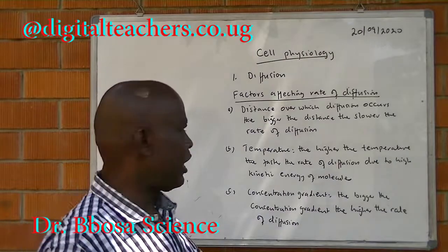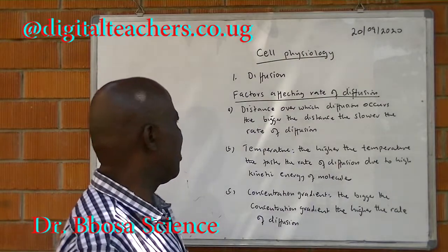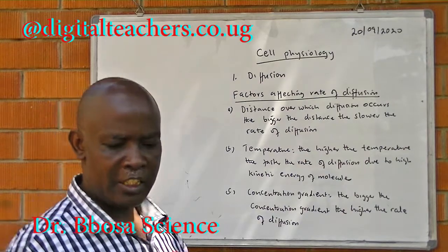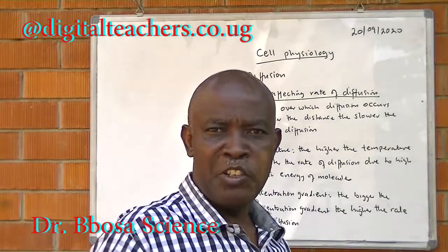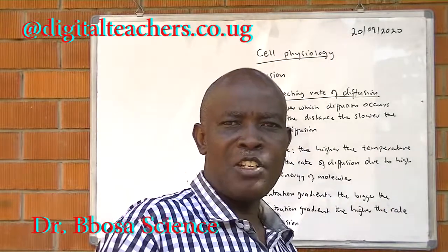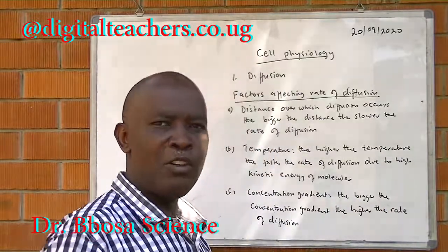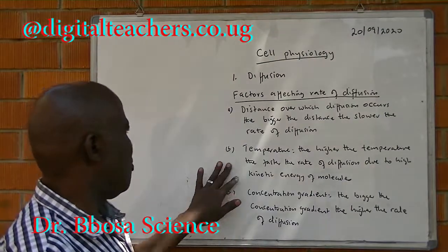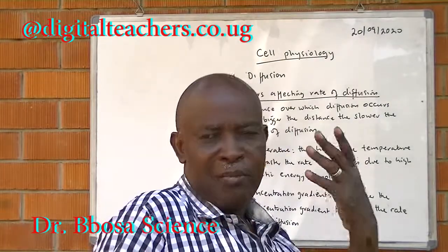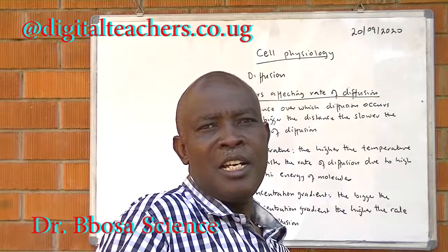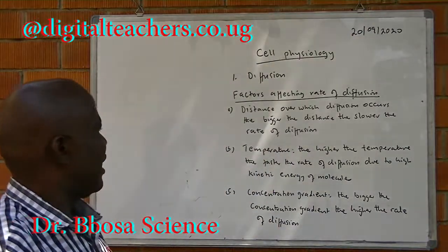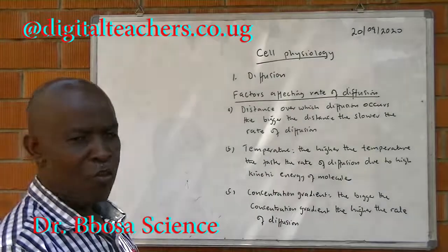Factors affecting the rate of diffusion. A: distance over which diffusion occurs — the bigger the distance, the slower the rate of diffusion. B: temperature — the higher the temperature, the faster the rate of diffusion, due to high kinetic energy of molecules.